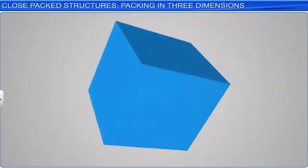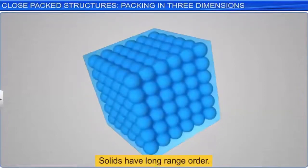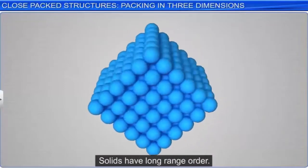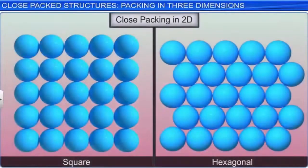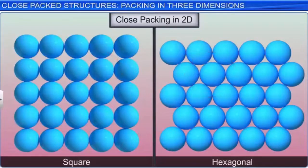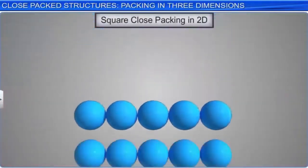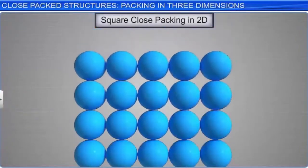Solids differ from the other states of matter in that they have long-range order. To achieve long-range order, all the constituent particles need to be arranged in a symmetrical pattern in three dimensions. We will extend our knowledge of close packing in two dimensions to build symmetrical patterns in three dimensions.